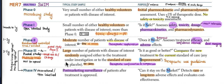Make sure to remember all key terms: maximum tolerable dose, efficacy, adverse reactions, therapeutic confirmation, therapeutic exploration, and so on. Also remember who the subjects are — healthy volunteers, patients, or both — for each phase.